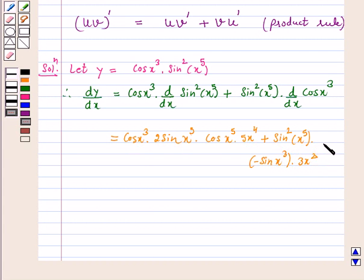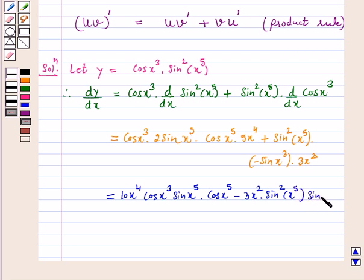So I hope this step is clear to you. Now this is again equal to 2 · 5x⁴, this is 10x⁴, cos(x³)sin(x⁵) · cos(x⁵) minus 3x² · sin²(x⁵) · sin(x³).